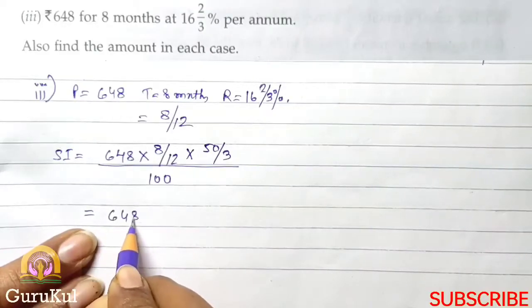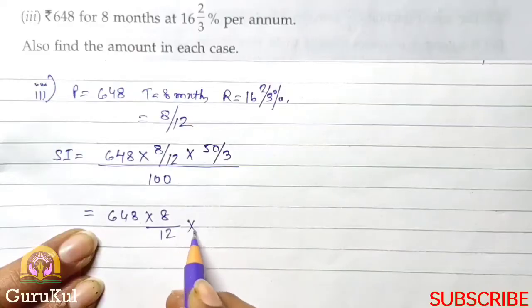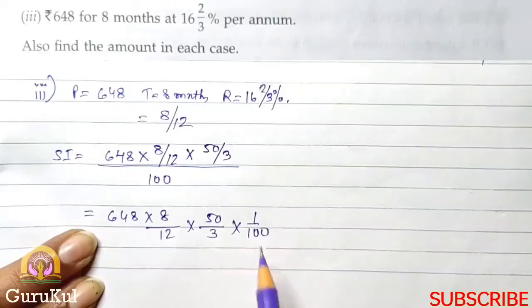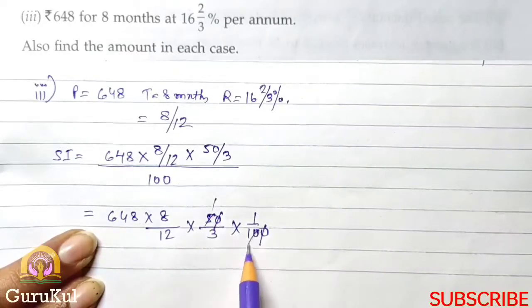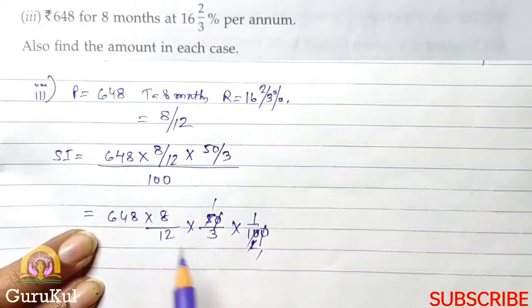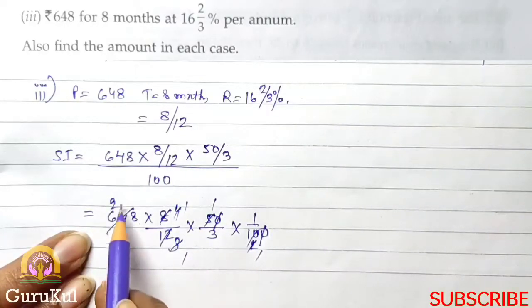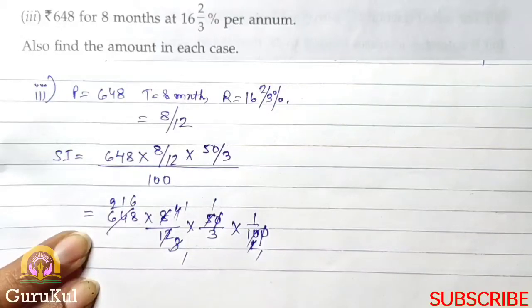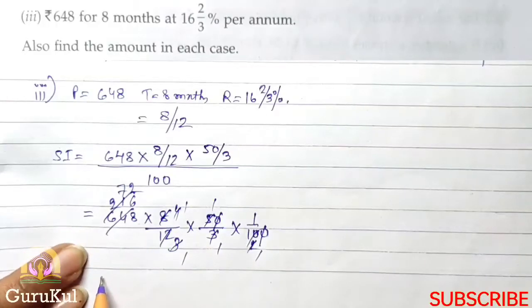Now let me begin. 648 into 8 by 12 into 50 by 3 into 1 by 100. 0, 0, 5 ones are, 5 twos are, 2 ones are, 2 fours are, 4 ones are, 4 threes are, 3 ones are, 3 two, one, six. 3 ones are, 3 sevens are, 3 twos are.